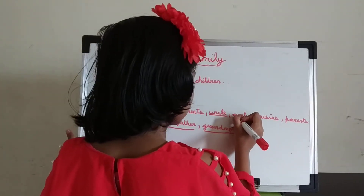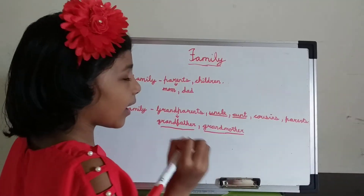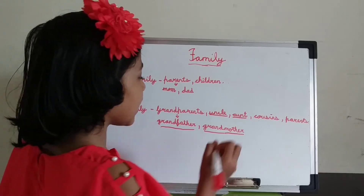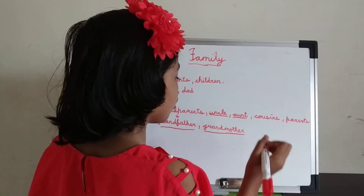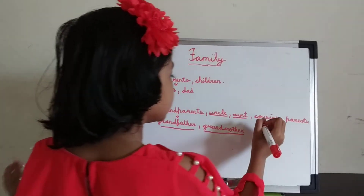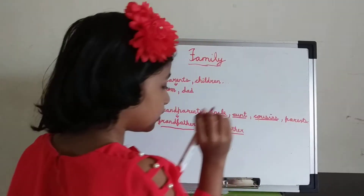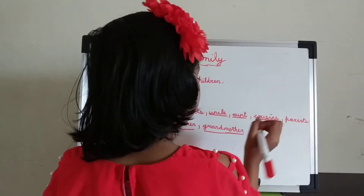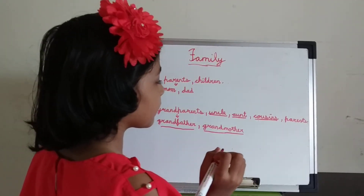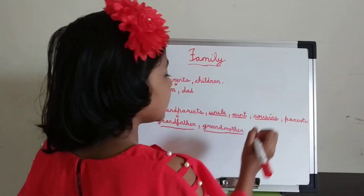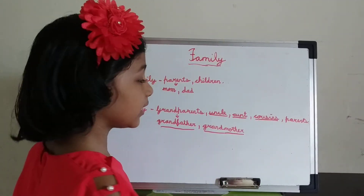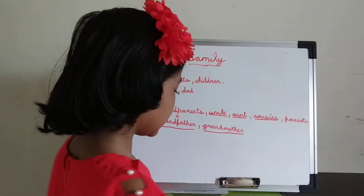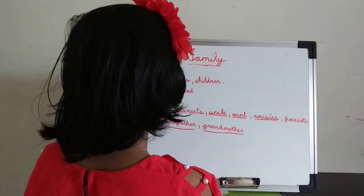Aunt: your father's or mother's sister is called aunt, and uncle's wife is also called aunt. Cousins: uncle's or aunt's son is called your cousin brother, and uncle's or aunt's daughter is called your cousin sister. Like this, relations are formed in a family.